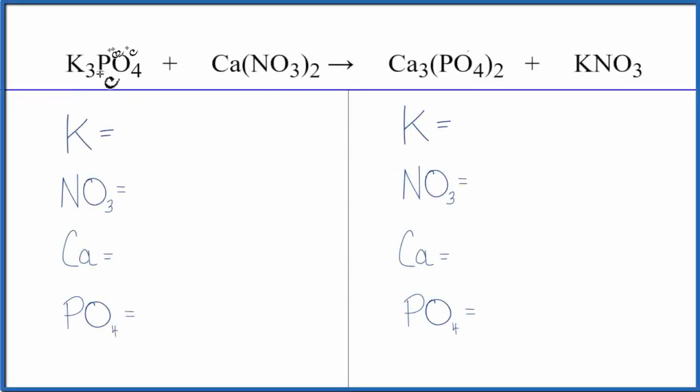In this equation, we have potassium phosphate plus calcium nitrate, and this is a double displacement reaction. The calcium and the potassium, they're going to switch places.